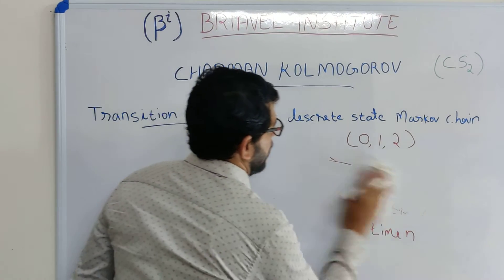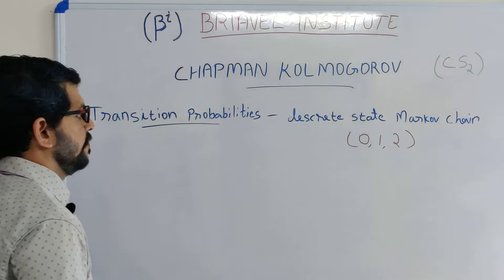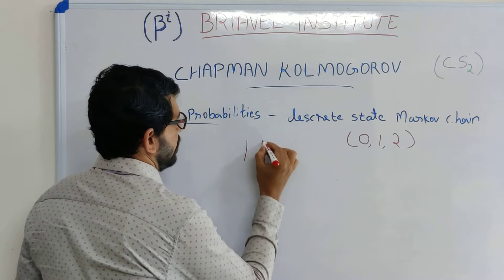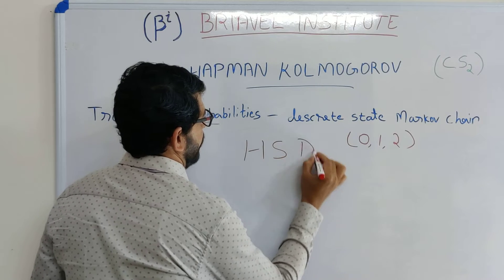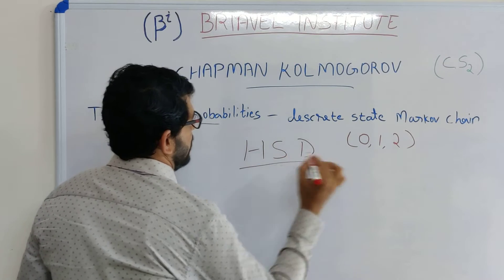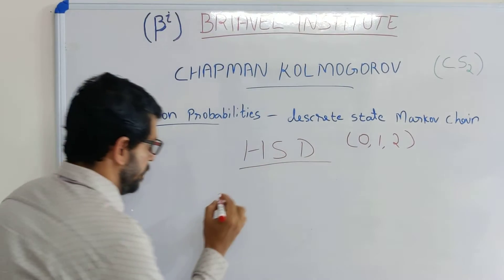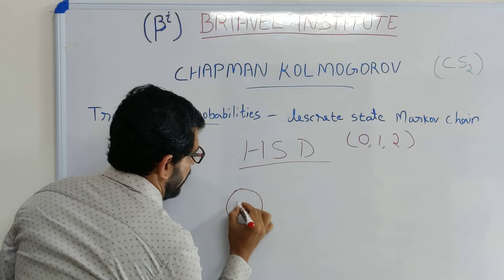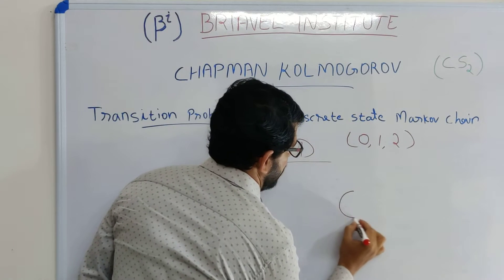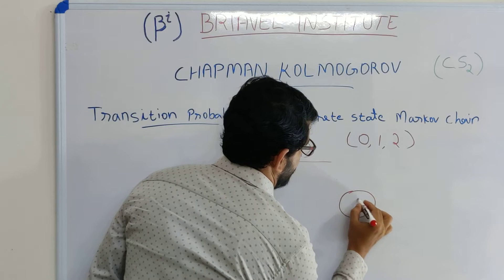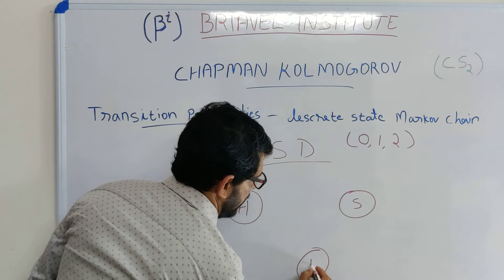We can consider one more well-known model used in insurance: the Health, Sickness, and Death model, or HSD model. This model has one healthy state, one sick state, and one death state.